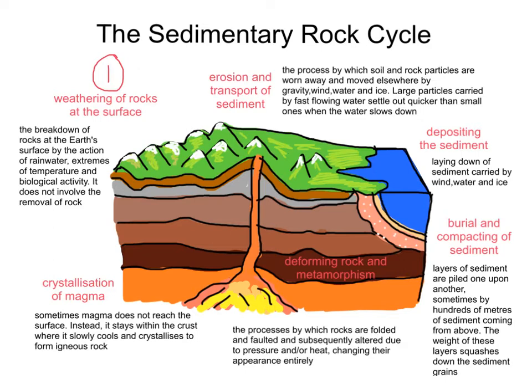Just to note in terms of chemical weathering: acidic rain can react with the rock, weakening it. And in another video, I talk about the formation of acid rain separately.